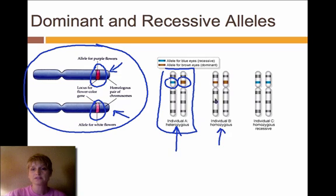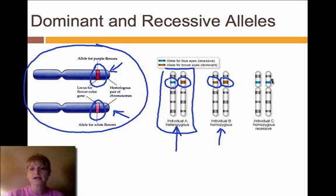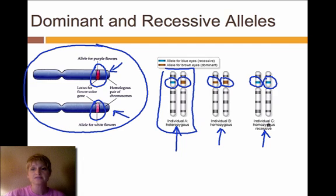Now in this one, we see that there are two brown-eyed alleles. We call this homozygous dominant — homozygous means they're the same, so they have the same alleles. They both have the allele for brown eye color, and so brown eyes is what that individual is going to have. This one is also homozygous, but we call this homozygous recessive because both the blue-eyed alleles are there. So there are two recessive alleles, and this individual is going to have blue eyes.